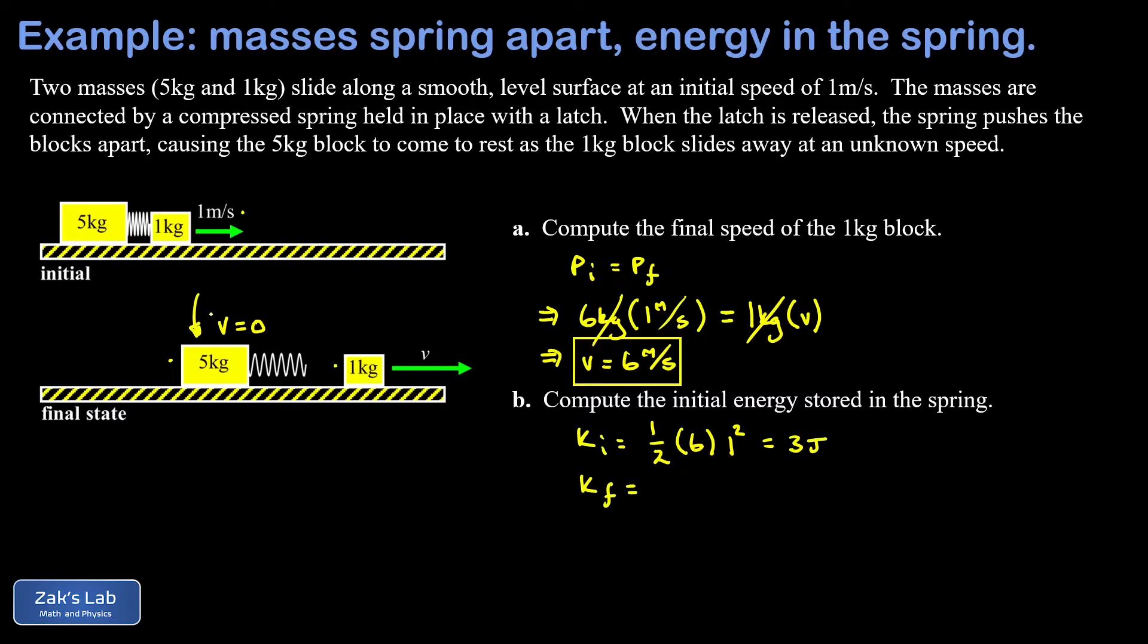Then we look at the final kinetic energy. The five kilogram block is stationary, so that doesn't have any kinetic energy. It's all in the smaller block, the one kilogram block. So I have one half times the mass, which is one, times the final speed squared, so six squared. That gives me 36 over 2 or 18 joules.